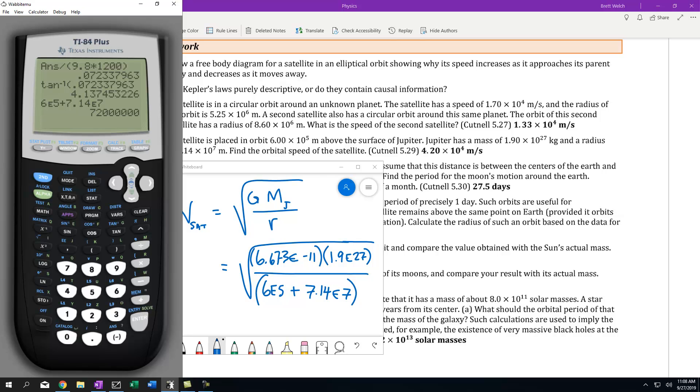Now I'm going to create the numerator: 6.673 times 10^-11 times 1.9 times 10^27, and I can divide that by my previous answer to get that value.